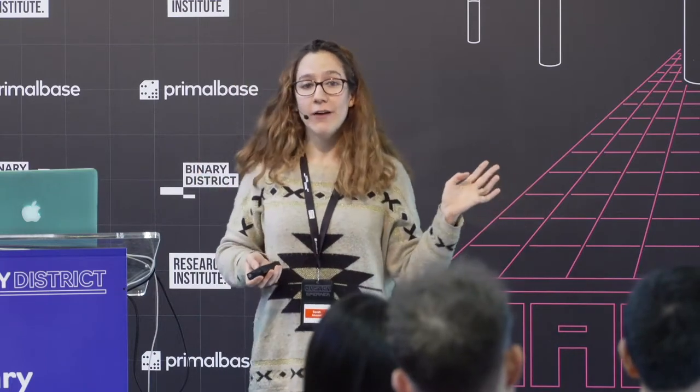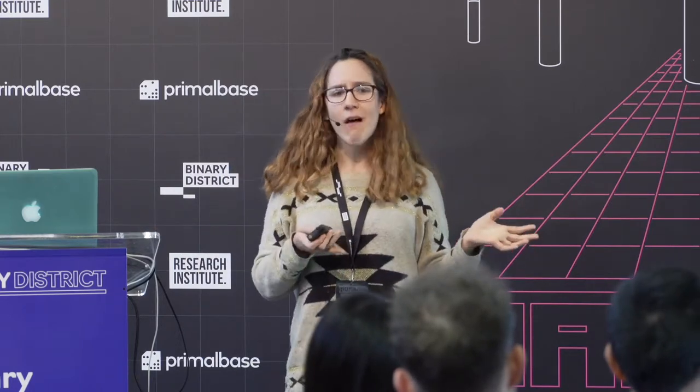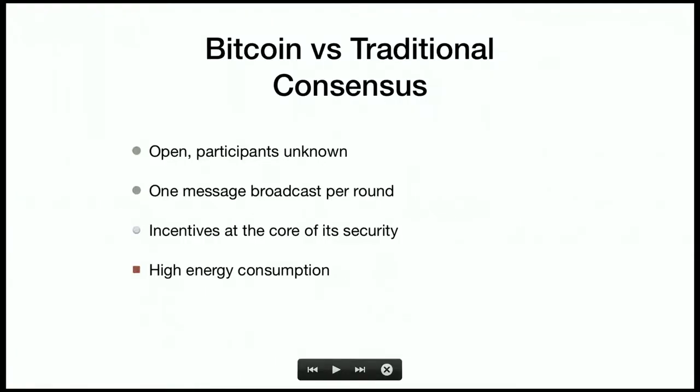But this has a cost — really high energy consumption. The last estimate was that proof of work was consuming as much energy as a million jets flying constantly. Some say it consumes more energy than Iceland or Ecuador. Everyone agrees it's very high. Also it's very slow — one block every 10 minutes, only seven transactions per second, so it's not very scalable.